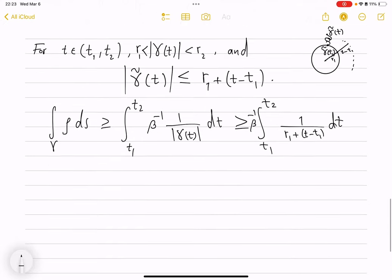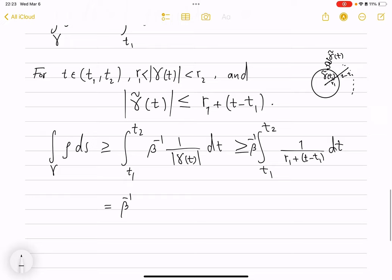If you calculate this integral, you exactly get beta inverse. And this is an anti-derivative is ln. So, you plug in t1, you get r1, and you plug in t2. Oh, okay. So, this is actually bigger then. So, let's do one more inequality.